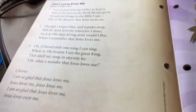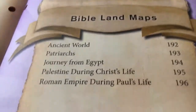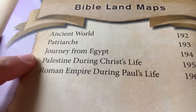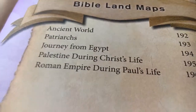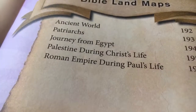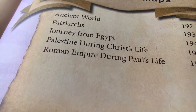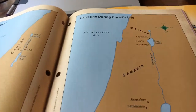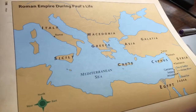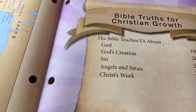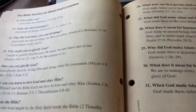And here are Bible land maps. They give you maps for the ancient world, the patriarchs' journey from Egypt, Palestine during Christ's life, and the Roman Empire. That's going to coincide with what we're studying in history — we're going to do Story of the World starting with ancient history. The maps are simple and help them see how far the different cities were from each other. Here's one about the Roman Empire during Paul's life.